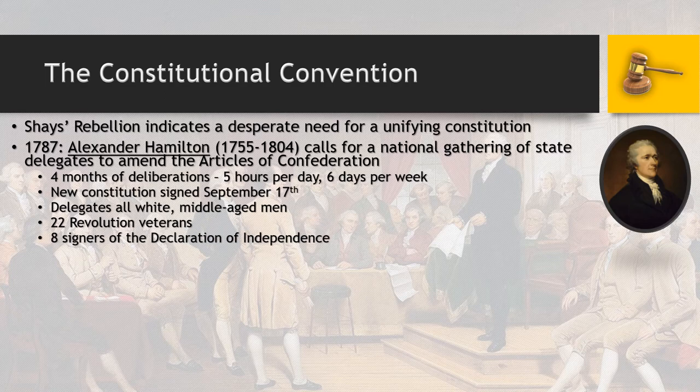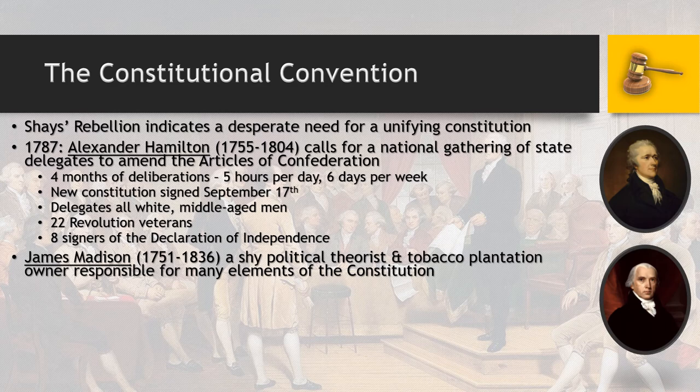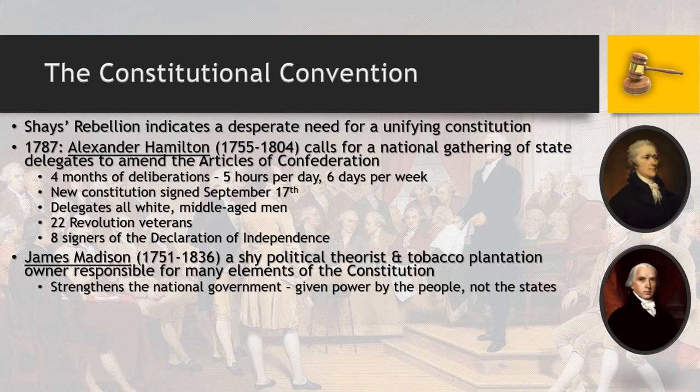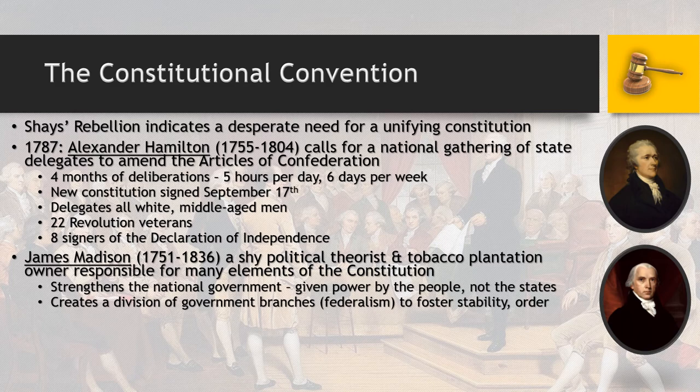Twenty-two of the people involved are veterans of the Revolution, and eight are signers of the Declaration of Independence. James Madison, a political theorist and tobacco plantation owner, is responsible for a lot of the theoretical elements of the Constitution. He strengthens the national government by giving power to the people rather than the states — if there's a consensus about who the people want to lead them, the states can't interfere. This is where we get the creation of a division of branches in government, referred to as federalism — creating stability so that one branch can't outweigh the other two without them keeping it in check through a system of checks and balances.